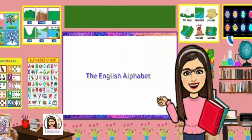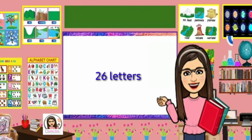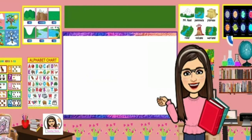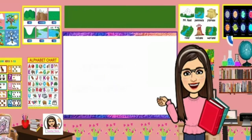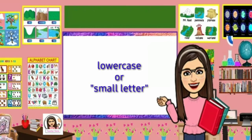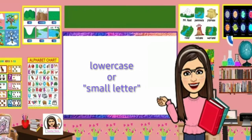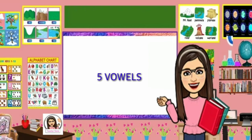The English alphabet consists of 26 letters. Each letter has an uppercase or capital letter and a lowercase or small letter form. Five of the letters in the English alphabet are vowels.